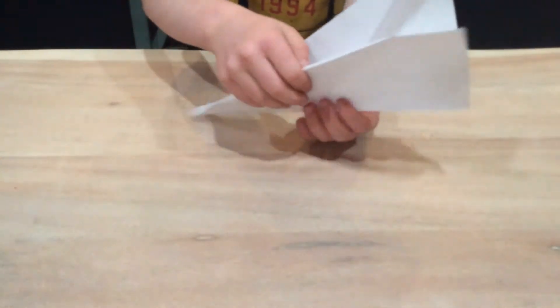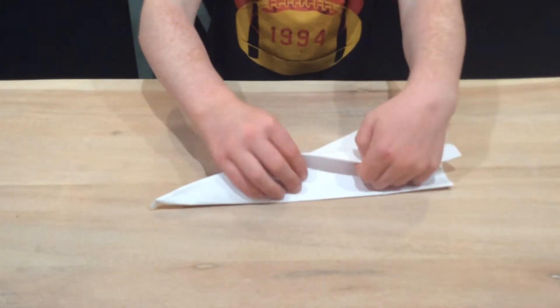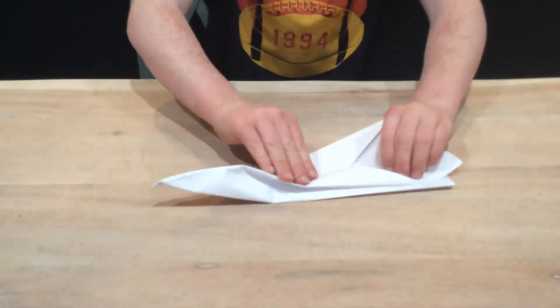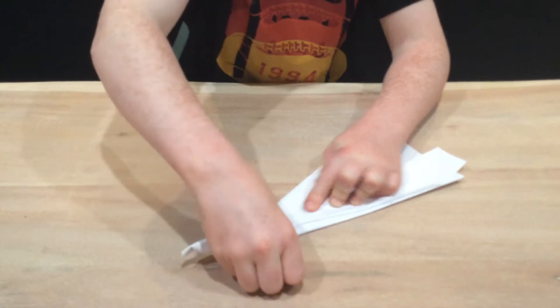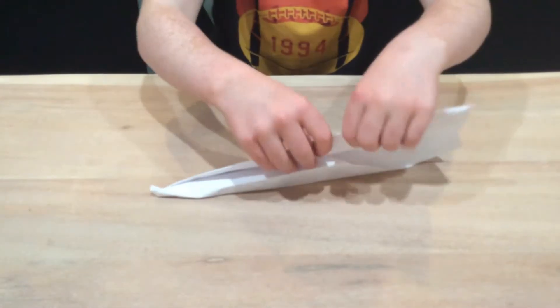Then you'll need to fold the edges like this to make the wings. Then you'll fold this side.